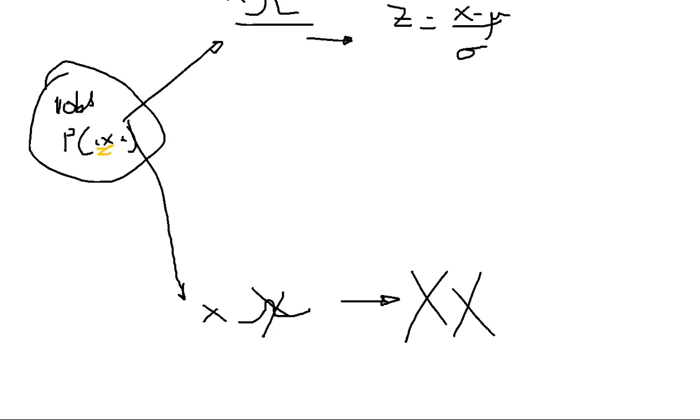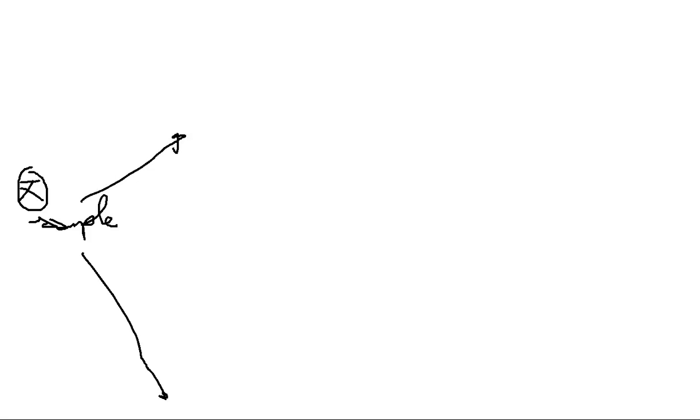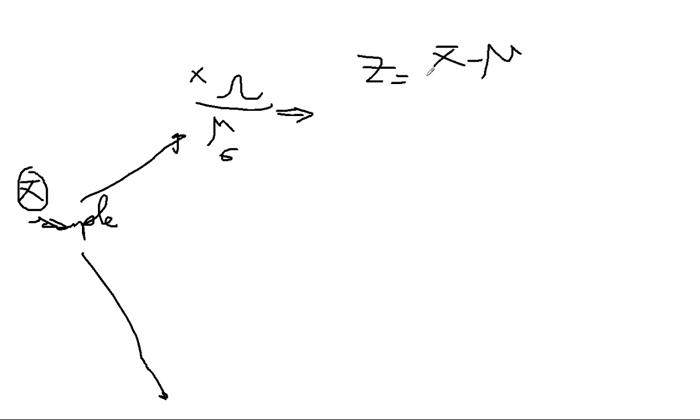The next case is when you're interested in calculating the probability of X-bar — so it's no longer one observation but a sample. If you're dealing with a sample, scenario one is that the sample is coming from a population where X has a normal distribution with mean mu and standard deviation sigma. Here you're going to use the general form of Z: X-bar minus mu over sigma divided by the square root of n.